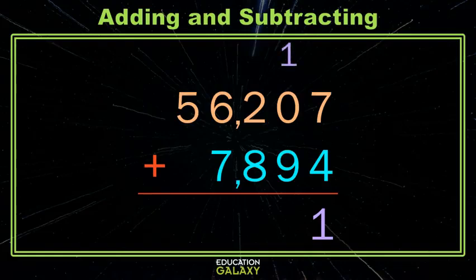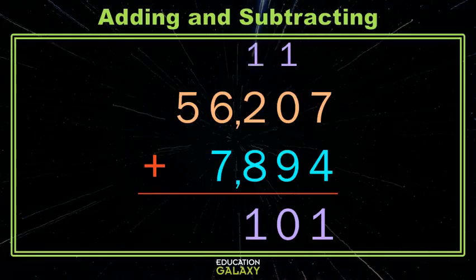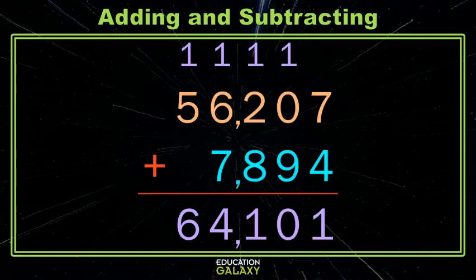Now we have zero and nine which is nine, plus the one we carried is ten. So we leave our zero here and we carry that one over. Then we have two and eight which is ten, with the one we carried so that's eleven, so we take one here and we give one to the neighbors. And then we have six and seven is thirteen plus the one we carried so that's fourteen. We can leave the four here but we have to carry a one to the neighbors. Now we just have one and five which is six, and boom we're done just like that.